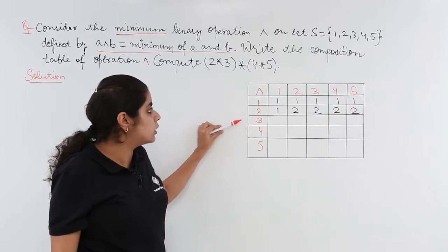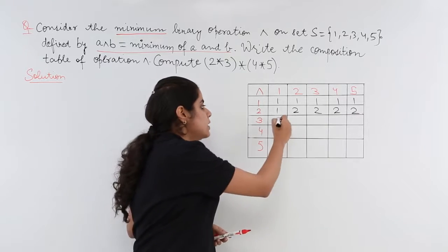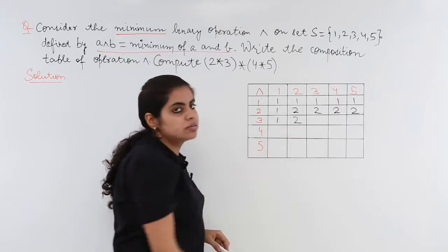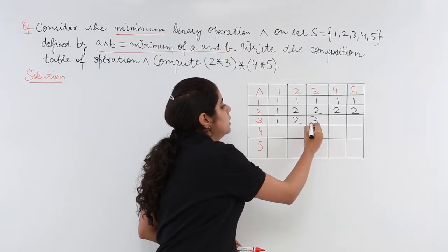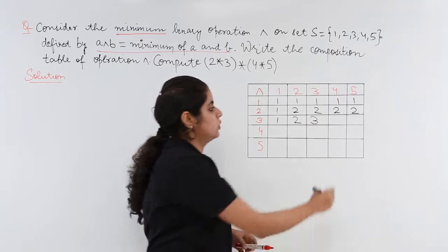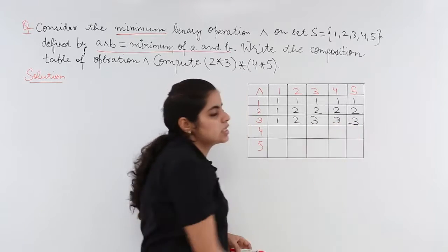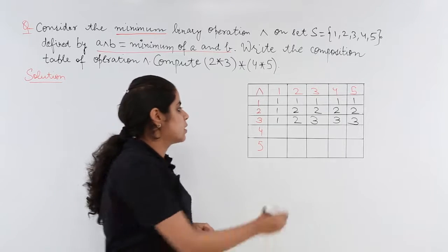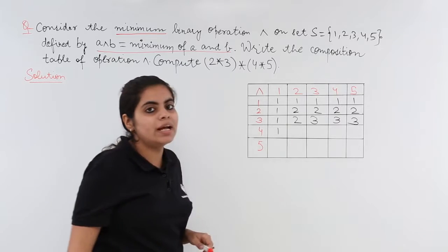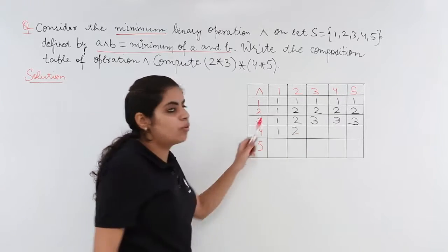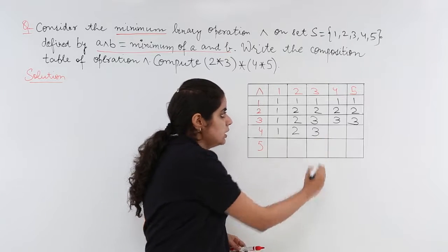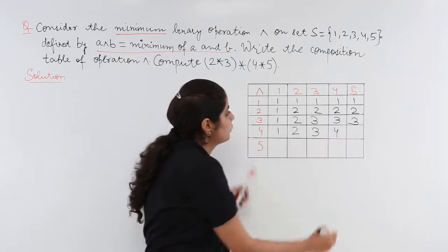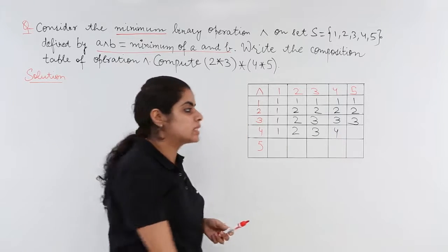What about 3 and 1? 1 is lesser, smaller. 3 and 2, 2 is smaller. 3 and 3, 3 is there. 3 and 4, 3 and 5, 3 is smaller. What about the next part, 4 and 1? 1 is smaller. 4 and 2, 2 is smaller. 4 and 3, 3 is less. 4 and 4, since 4 is same, it remains as is. 4 and 5, 4 is less.